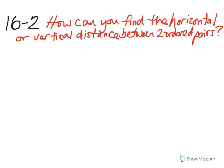This is lesson 16-2 and the focus is how can you find the horizontal or vertical distance between two ordered pairs. You have learned that ordered pairs name locations on a coordinate grid. Today you will learn how to use ordered pairs to find length or distance between them.